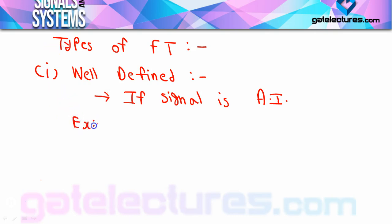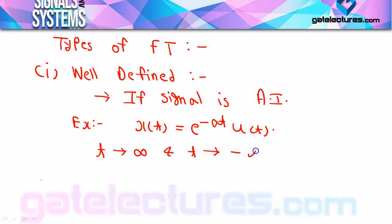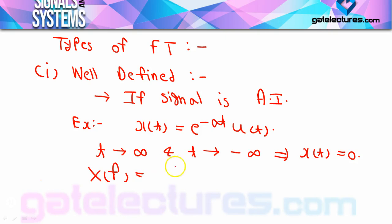In the last video we took a signal e^(-at)u(t). If you look at this signal, as t tends to infinity and t tends to minus infinity, in both cases x(t) comes to zero. You can see e^(-infinity) is zero, and since it's multiplied by u(t), putting t = minus infinity gives zero on the negative side always. So x(t) is absolutely integrable, and we calculated its Fourier transform easily as 1/(a + j2πf). So all absolutely integrable signals will have well-defined Fourier transforms.